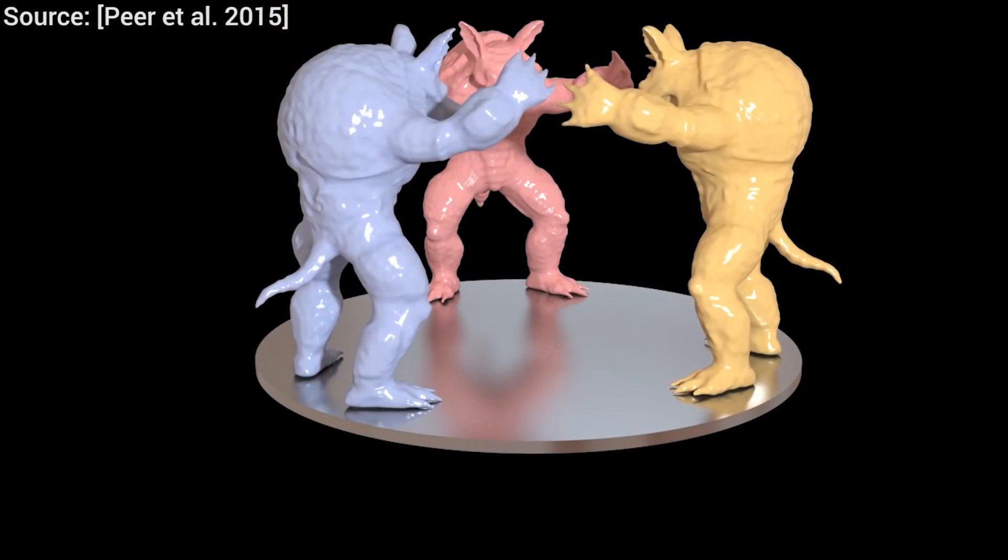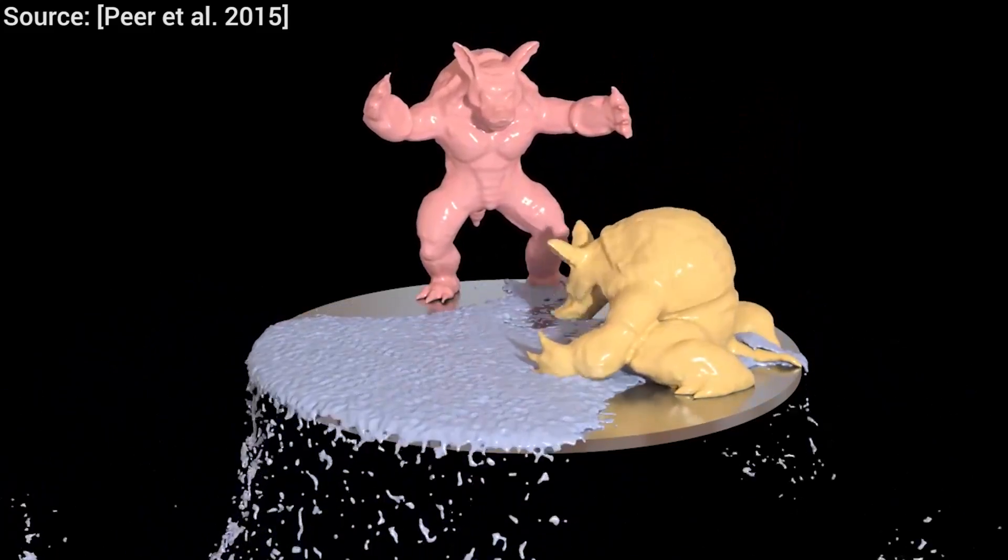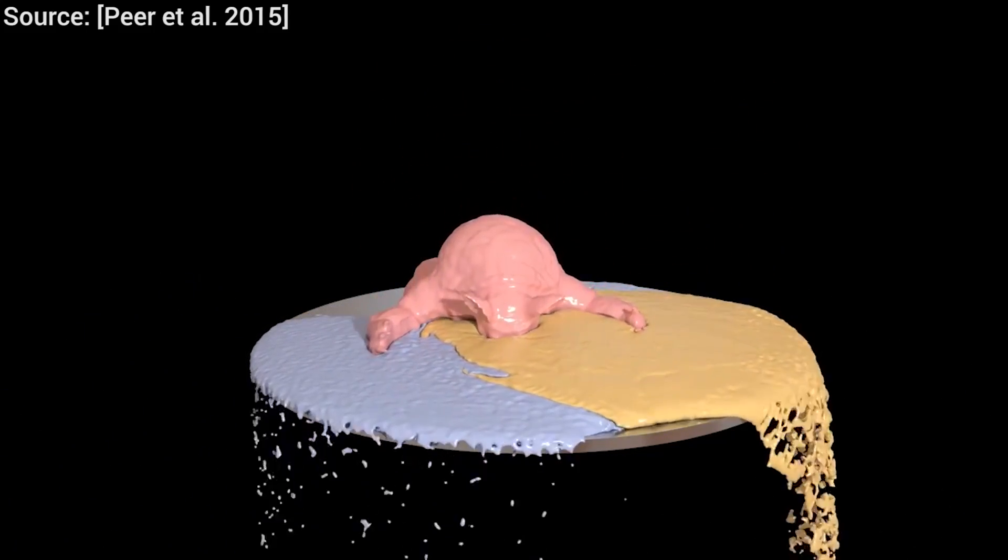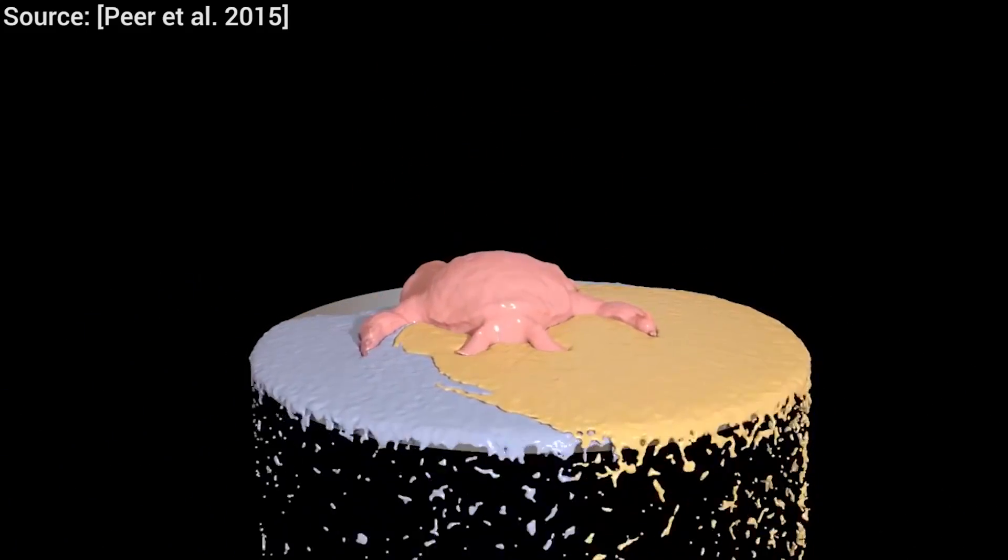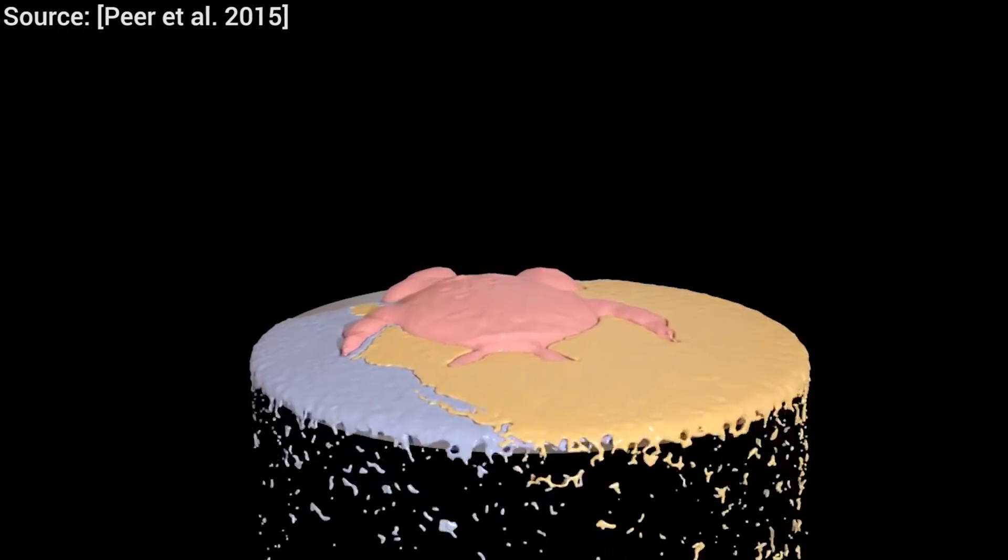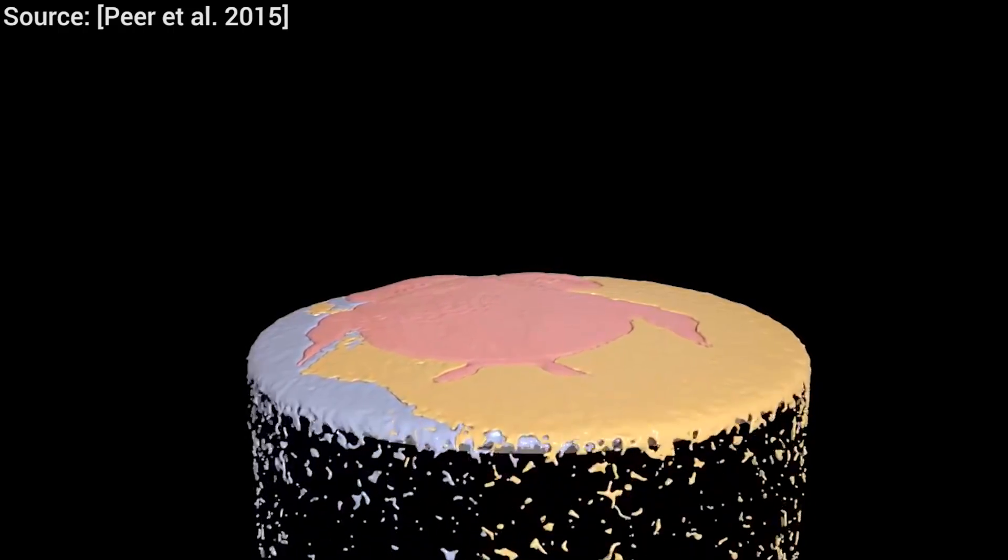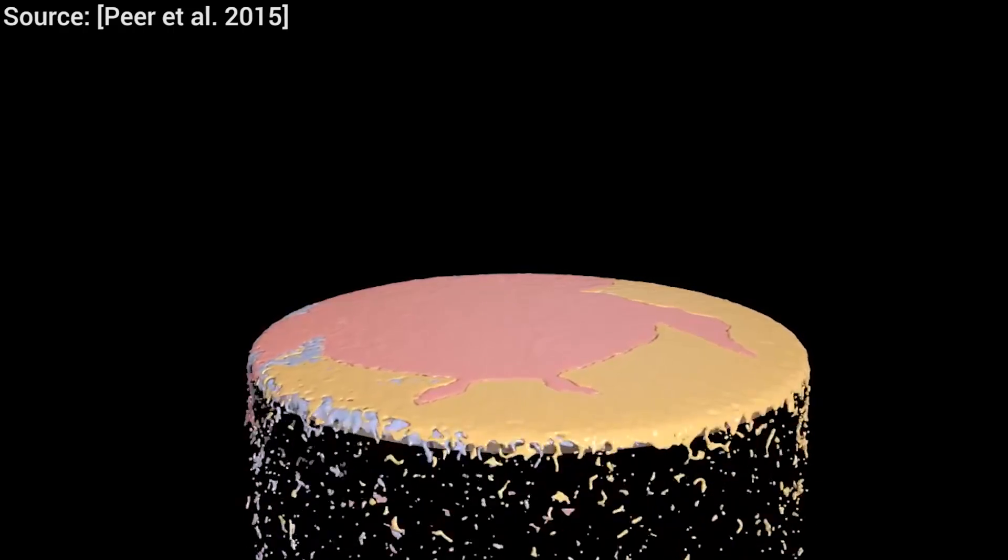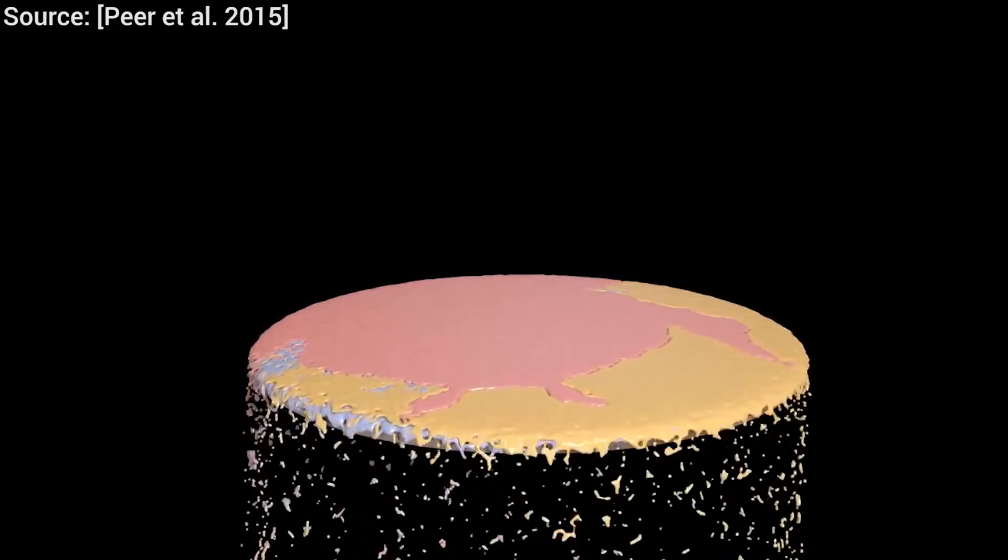Viscosities can also change in time. For instance, physicists know that raising the temperature will make the viscosity of fluids decrease, which leads to melting. Therefore, decreasing the viscosity in time will lead to a simulation result that looks exactly like melting.